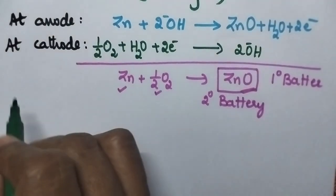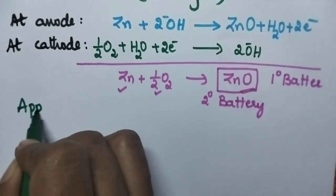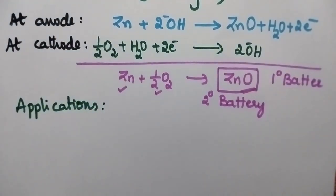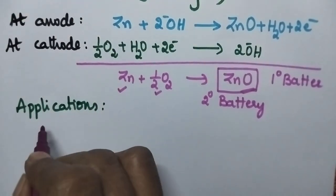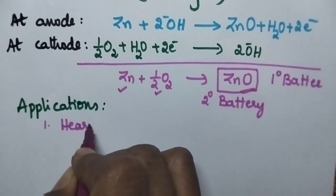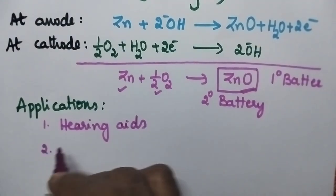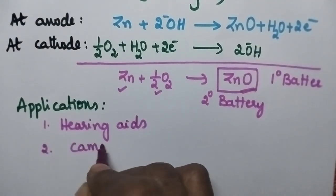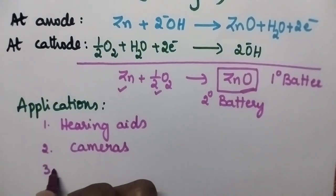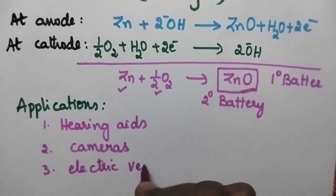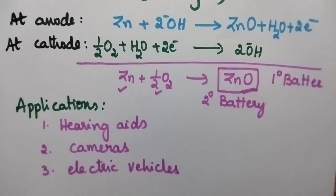Coming to the applications of zinc-air battery. Especially zinc-air battery can be used in hearing aids, cameras, and electric vehicles. These are the important applications of zinc-air battery.